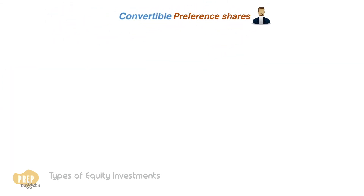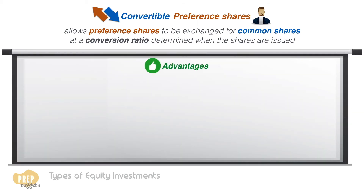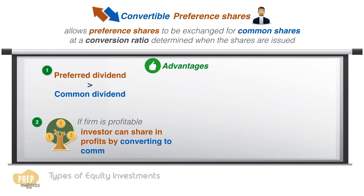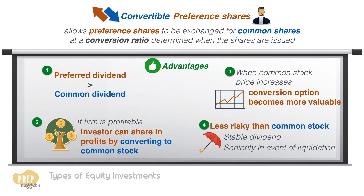Lastly, some preference shares have a convertibility option. This allows preferred stockholders to exchange their shares for common shares at a conversion ratio determined when the shares are originally issued. The preferred dividend is higher than a common dividend. If the firm is profitable, the investor can share in the profits by converting shares into common stock. When the common stock price increases, the conversion option becomes more valuable. Preferred shares are also less risky than common shares because the dividend is stable and they have seniority over common stock in the event of liquidation.